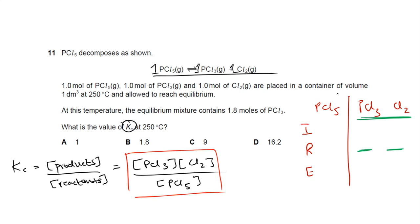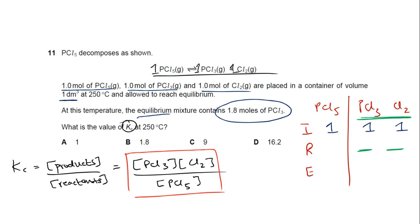Initially, the moles of PCl5 are one mole. Because the volume is 1 dm³, the concentration for each is 1 mol/dm³. So initially I have 1 mol/dm³ each of PCl5, PCl3, and Cl2. At equilibrium we have 1.8 moles of PCl3, meaning 0.8 moles of PCl3 have been formed — I'll label this 'F' for formed.